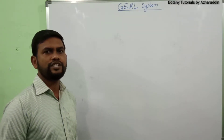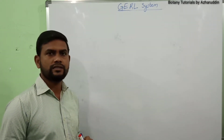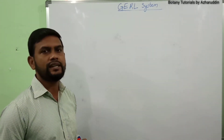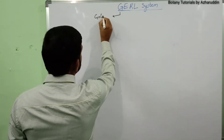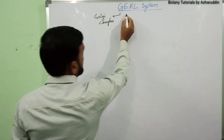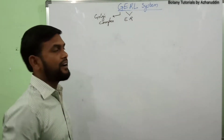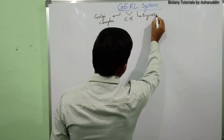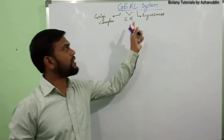Hello everyone. In the previous part we discussed about cell organelles, lysosomes, and their structure and functions. Today's topic is the GERL system. In GERL, G stands for Golgi body or Golgi complex, E stands for endoplasmic reticulum, and L stands for lysosomes.